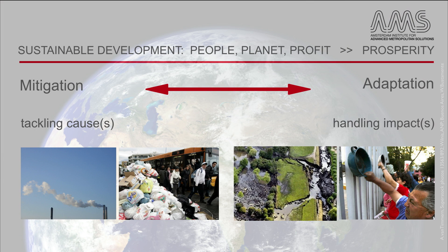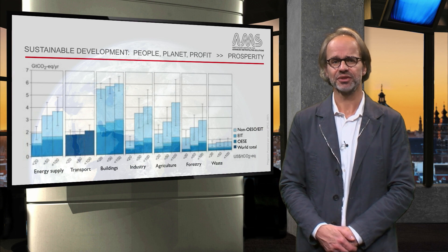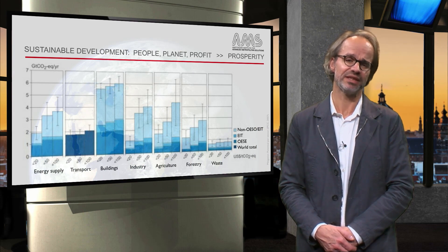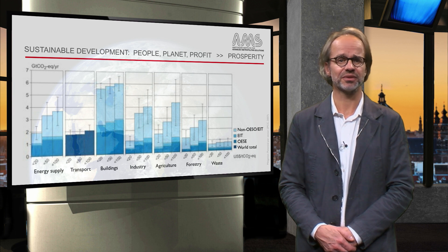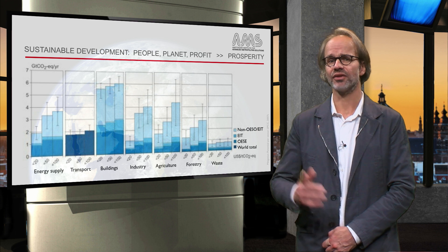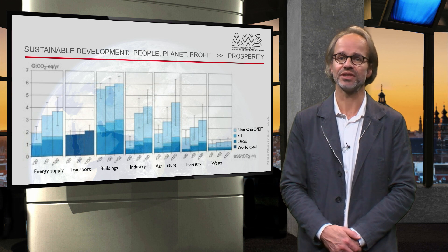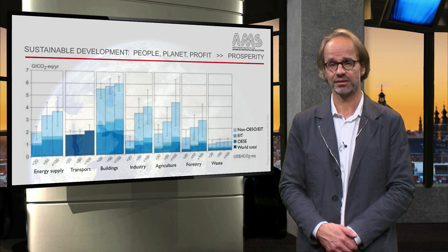Here two actions are distinguished: tackling causes, or doing things the right way, called mitigation, and handling impacts, or responding to negative aspects, called adaptation. The International Panel for Climate Change calculated the potential for different sectors to mitigate, and where most potential to achieve carbon reductions are. As you can see in the graph, in particular buildings, transport and energy supply are key sectors to achieve positive change towards a sustainable society.